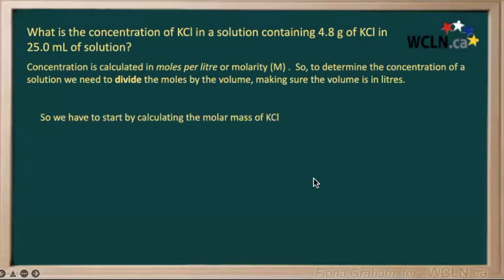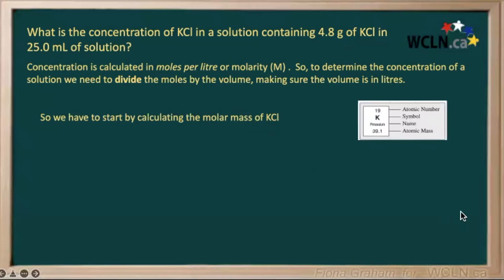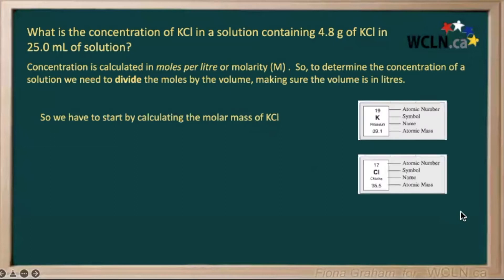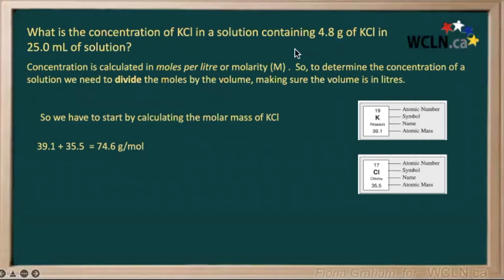To calculate how many moles we have, we need to know the molar mass of potassium chloride. Looking at the periodic table, we have one potassium and one chlorine: potassium is 39.1 g/mol and chlorine is 35.5 g/mol. Adding those together gives us 74.6 grams per one mole of potassium chloride.